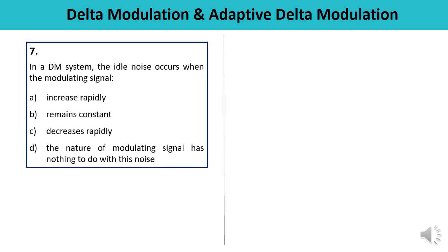Question 7: In a DM (Delta Modulation) system, idle noise occurs when the modulating signal does what — increases rapidly, remains constant, decreases, decreases rapidly, or has nothing to do with the noise? Idle noise is also known as granular noise. It occurs when the step size is too large in comparison to the small variation in the input signal — meaning the input signal is varying very little or remains almost constant, but the staircase signal changes by a large amount Delta.